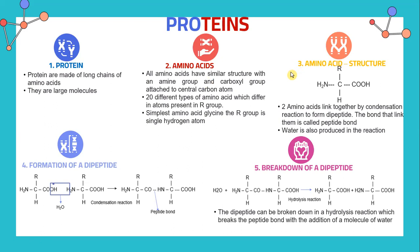Let's look into protein. Proteins are made of long chains of amino acids, and they are very large. Amino acid has a similar structure with an amine group and a carboxylic group that attach to a central carbon atom. There are 20 different types of amino acid which differ in the atoms present in the R group. The simplest amino acid is glycine, where the R group is a single hydrogen atom.